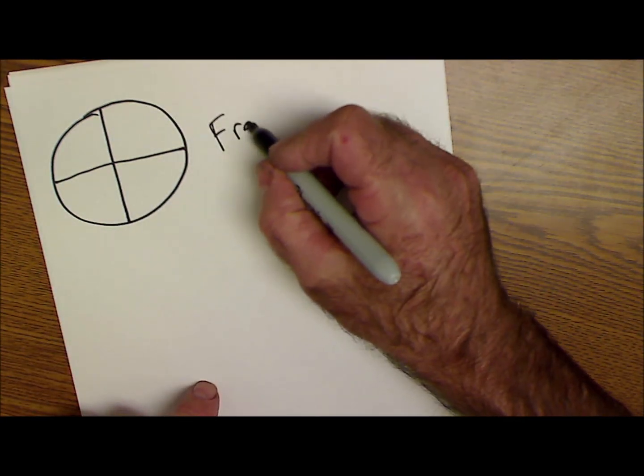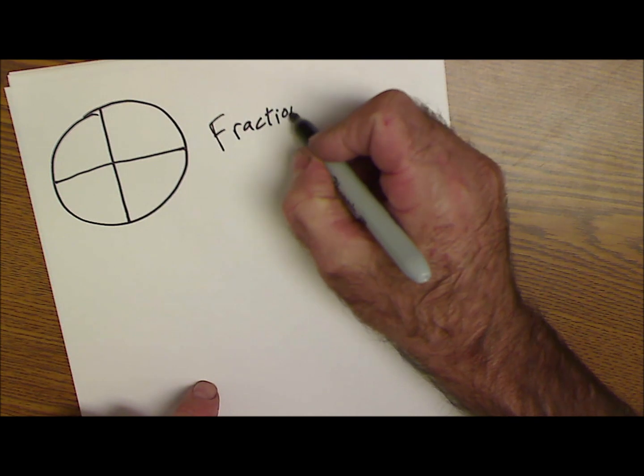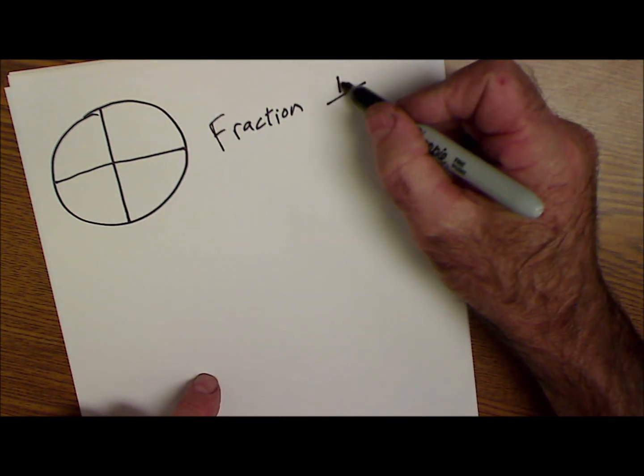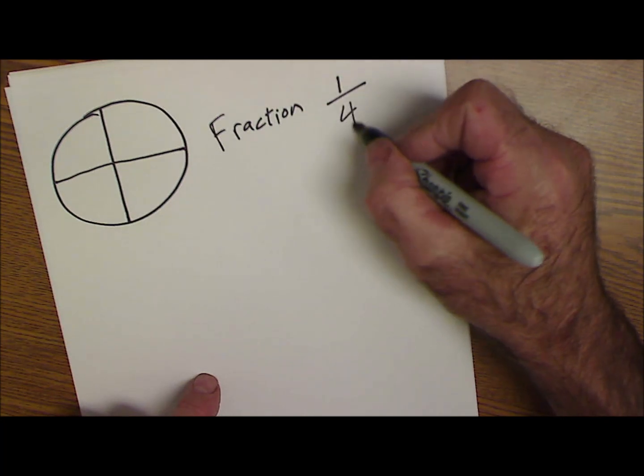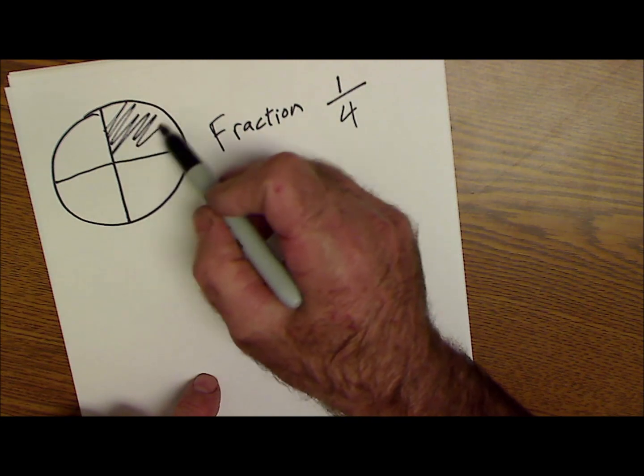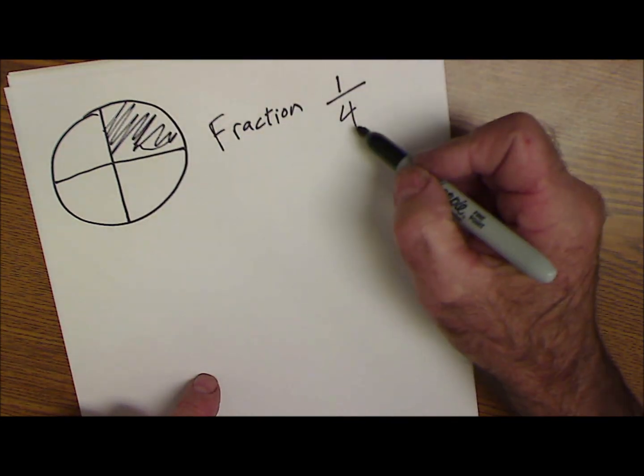So all a fraction is, is one number over another, and the top is how many of the pieces you have, and the bottom is the total number of pieces. So if you look at a pie here, if I have one of the four, it's one-fourth.